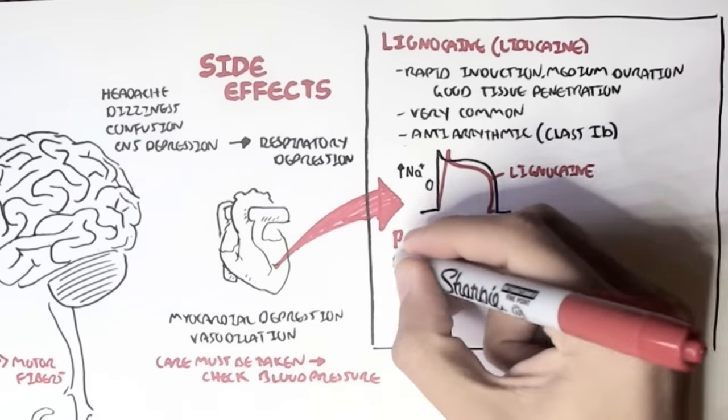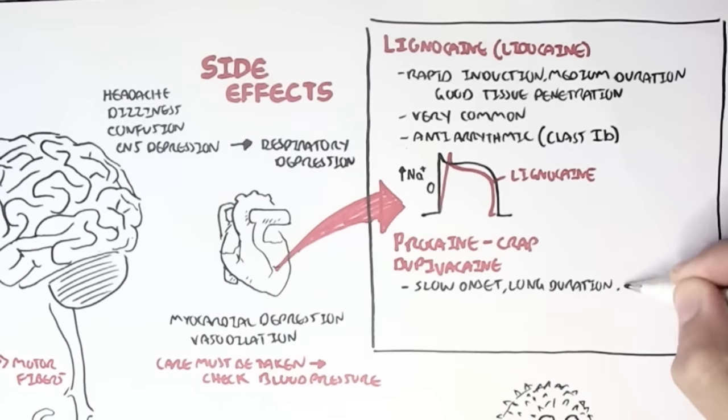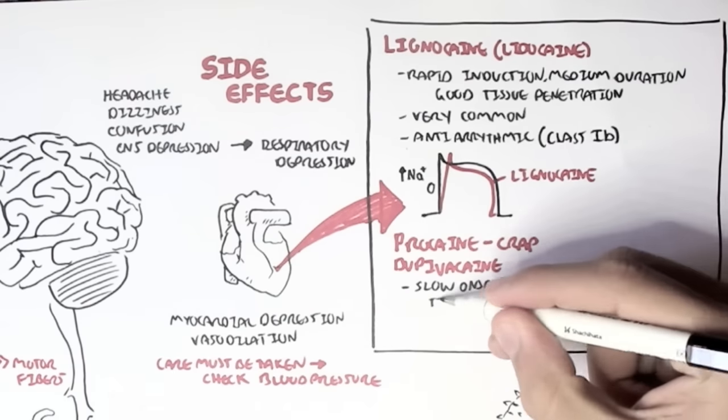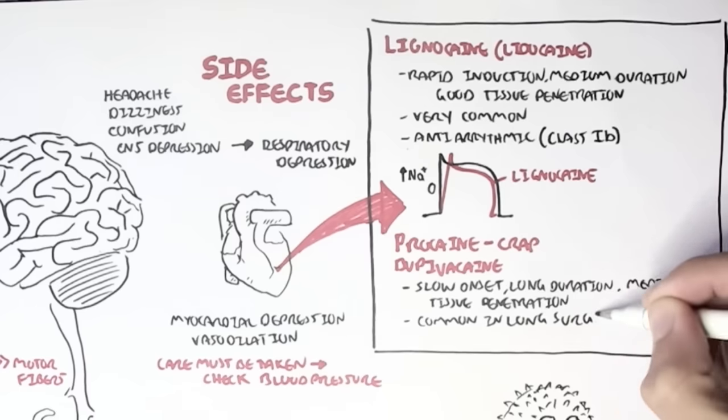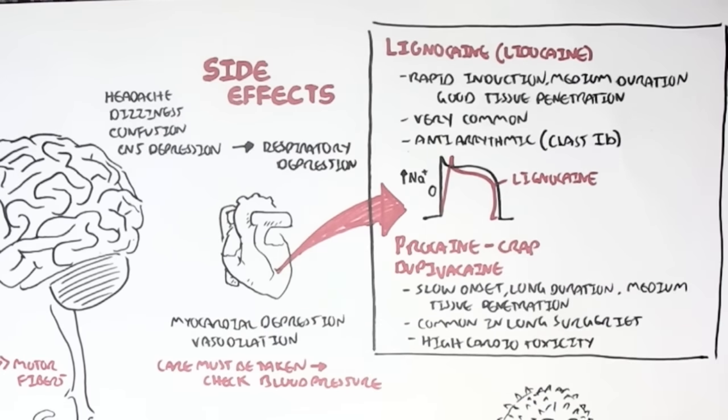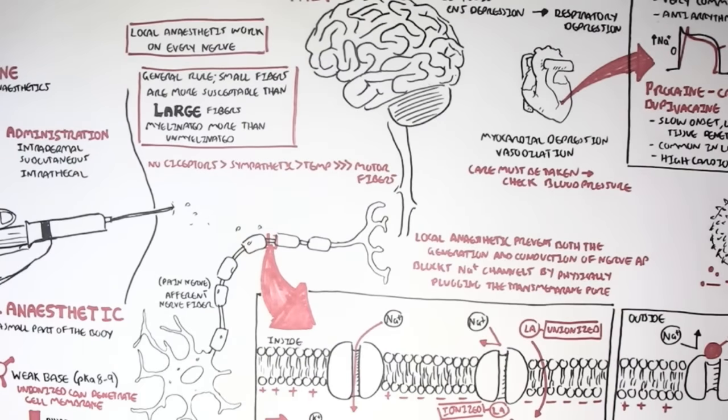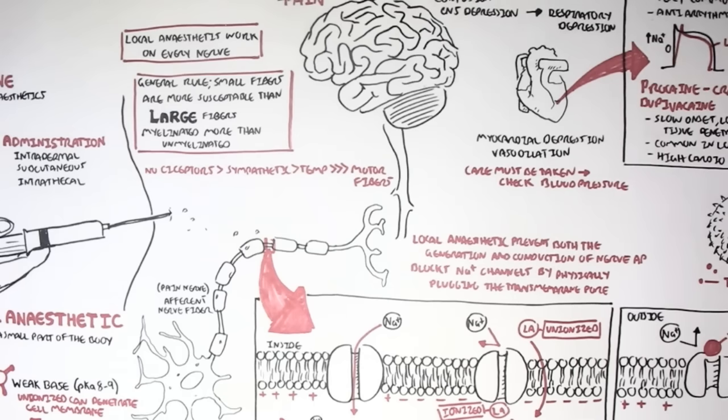And the last local anesthetic I'm going to talk about is bupivacaine. It has a slow onset, a long duration, and medium tissue penetration. So it's pretty good. And that is why it is commonly used in long surgeries, because of this long duration. However, it has high cardiotoxicity. So care must be taken when using this with people suffering from heart failure or something like that.